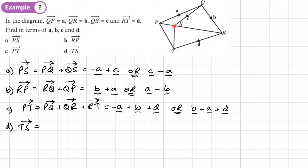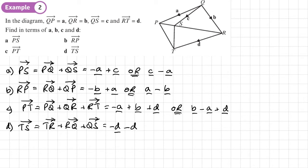Part d — find t to s. Going from t to s, we take the route t to r, r to q, then q to s. T to r is negative d, r to q is negative b, and q to s is positive c. So t to s equals negative d minus b plus c, or rearranged as c minus d minus b.